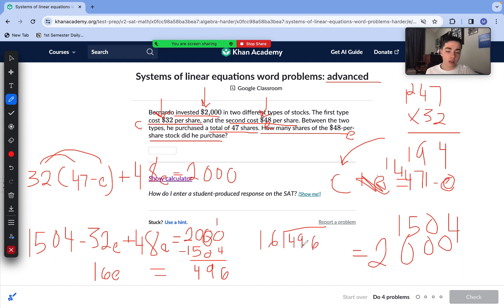So now we are just left with 16E equals 496. To isolate our E variable, we need to divide each side by 16. So we have to do 496 divided by 16. 16 goes into 49 three times to produce 48, and then 16 goes into 16 one time. That means we purchased 31 shares of our $48 per share stock. So our answer is E equals 31.